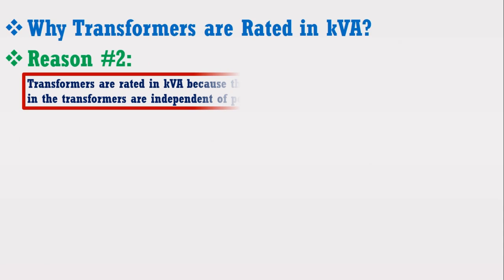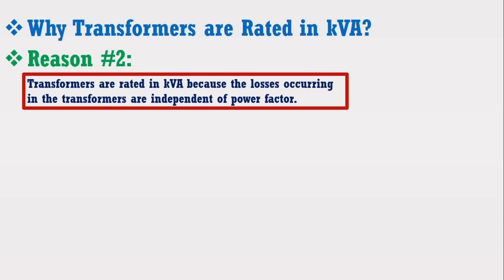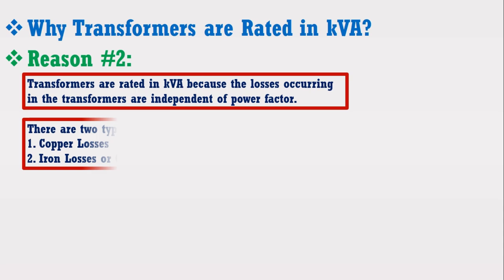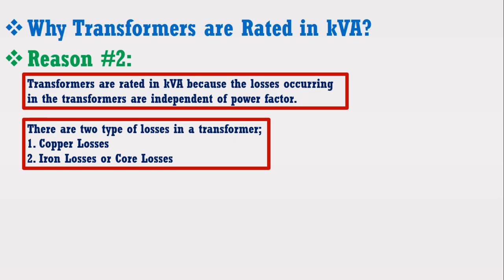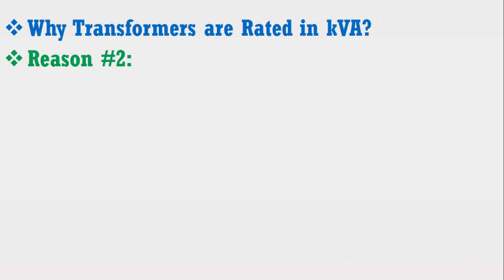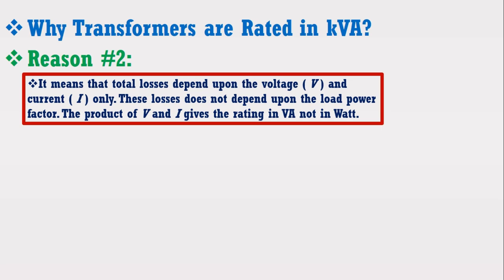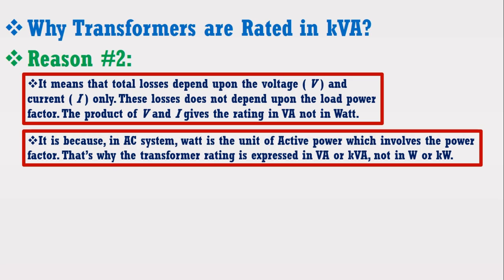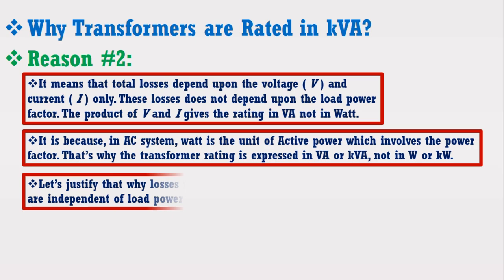Now, Reason No. 2: Transformers are rated in kVA because the losses occurring in the transformers are independent of the power factor. Basically, there are two types of losses in a transformer: Number 1, copper losses; Number 2, iron losses or core losses. Copper losses depend upon the current passing through the transformer winding, while iron losses or core losses depend upon the voltage. This means total losses depend upon voltage and current only — these losses do not depend upon the load power factor. The product of V and I gives the rating in VA, not in Watts, because in AC systems, Watts is the unit of active power which involves the power factor. That is why transformer rating is expressed in VA or kVA and not in Watts or kW.